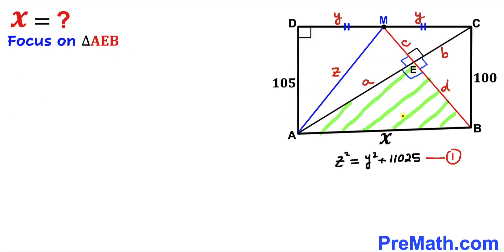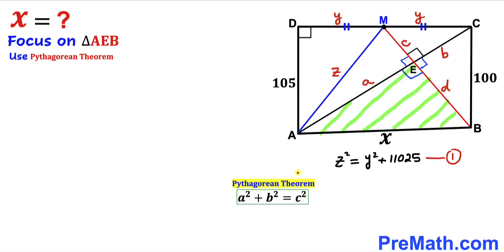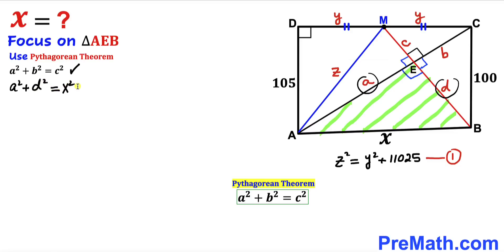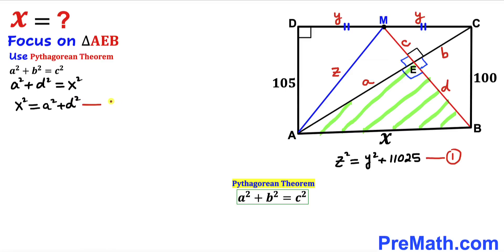Next, focusing on right triangle AEB, we apply the Pythagorean theorem. AB is the longest leg, so we get a² + d² = X², which we can write as X² = a² + d². We call this equation number two.